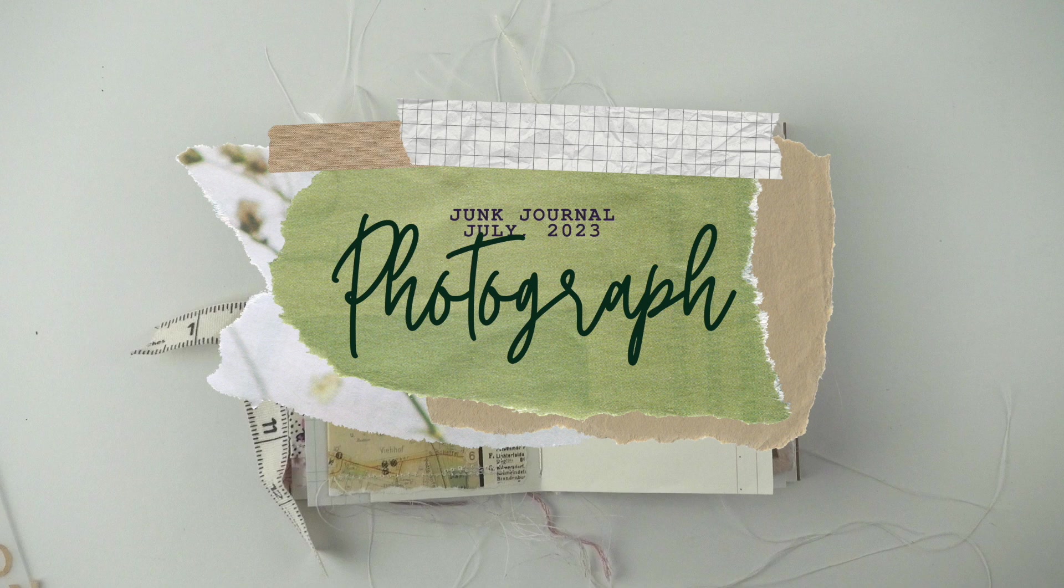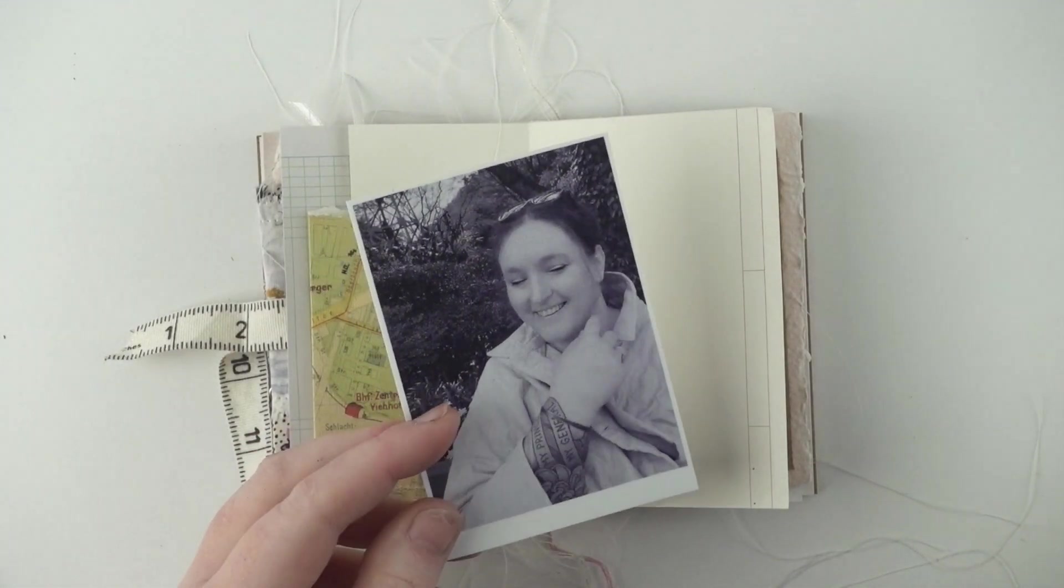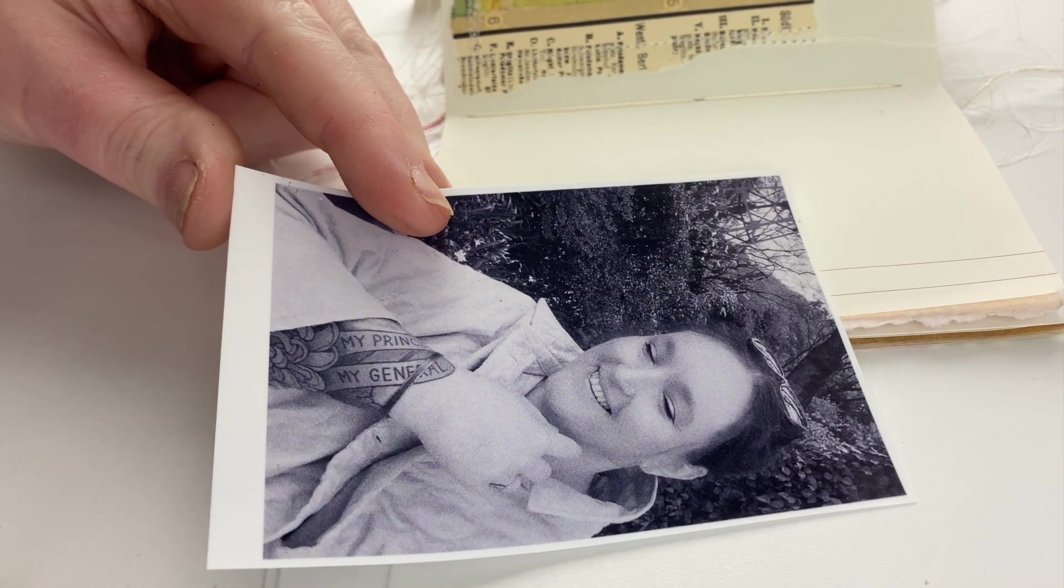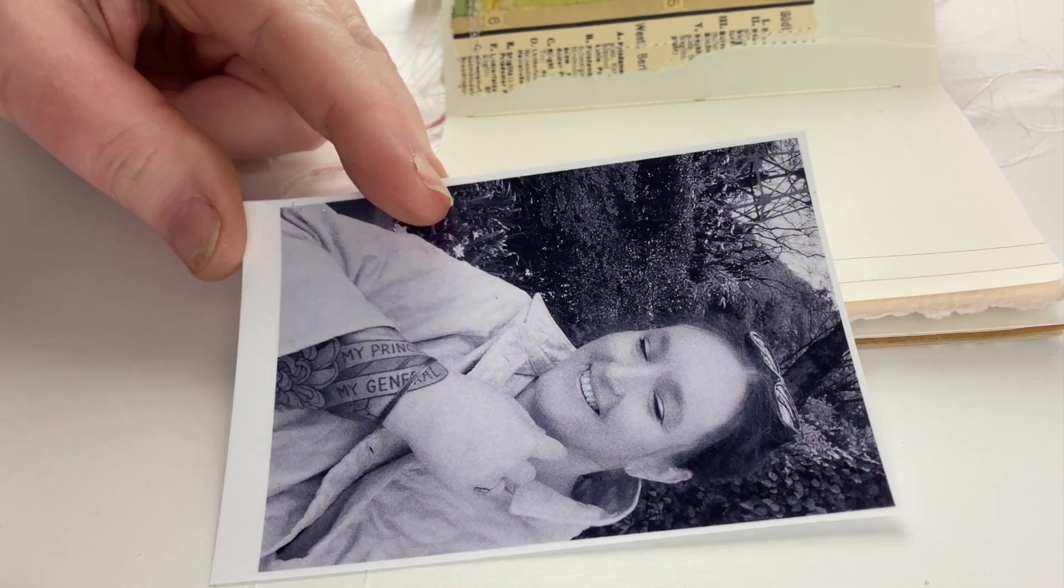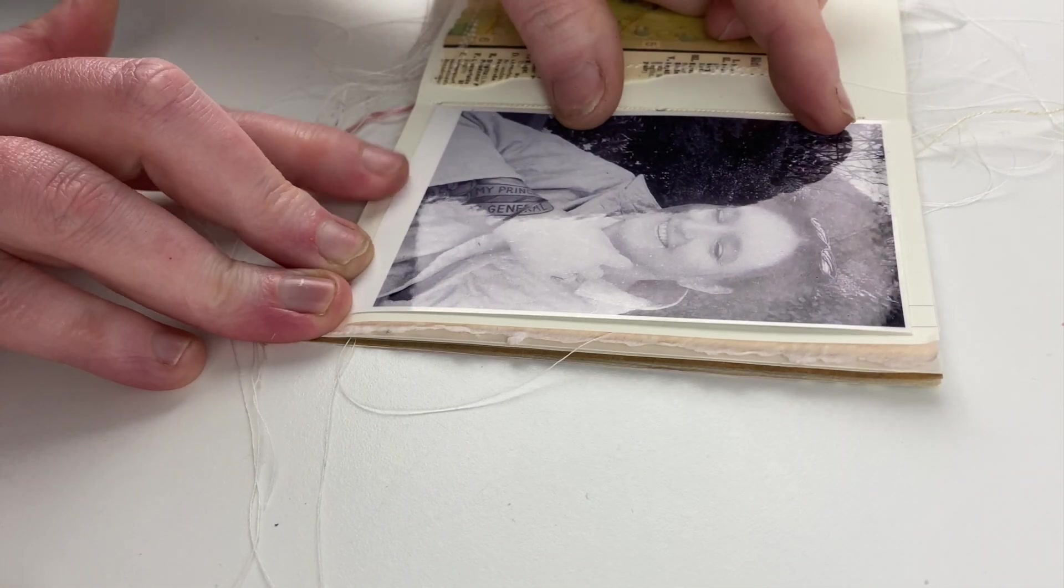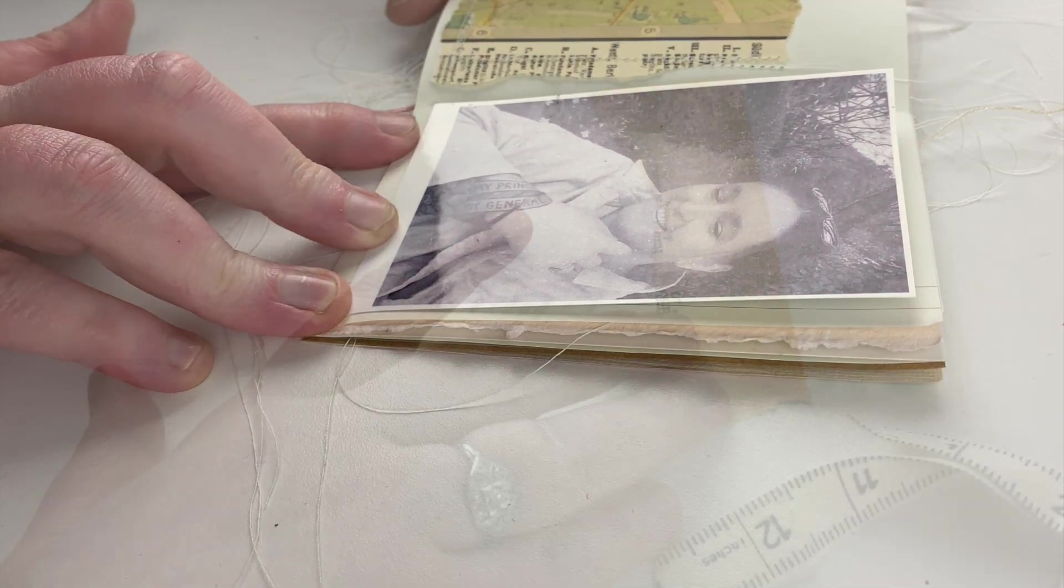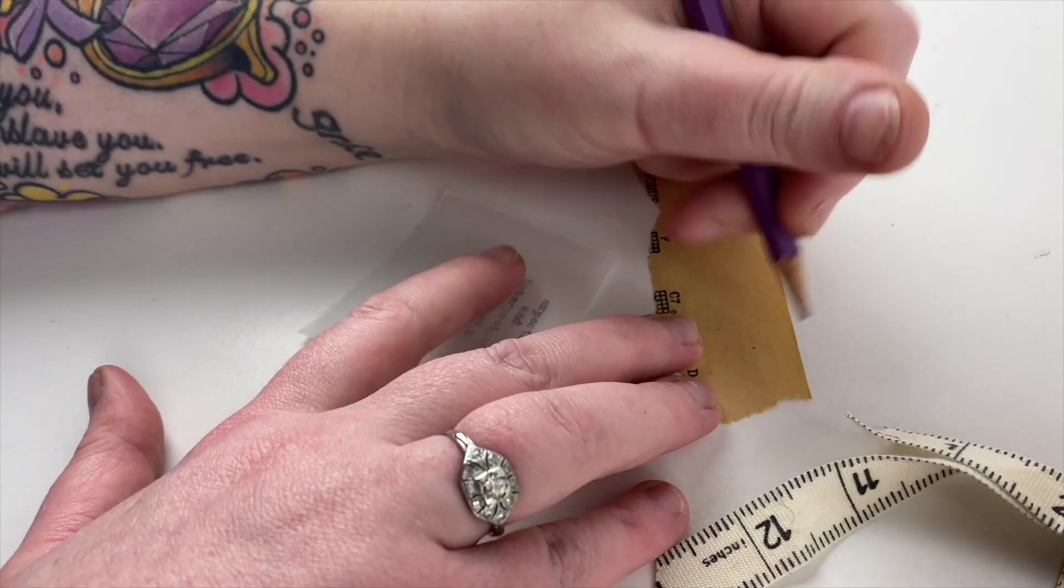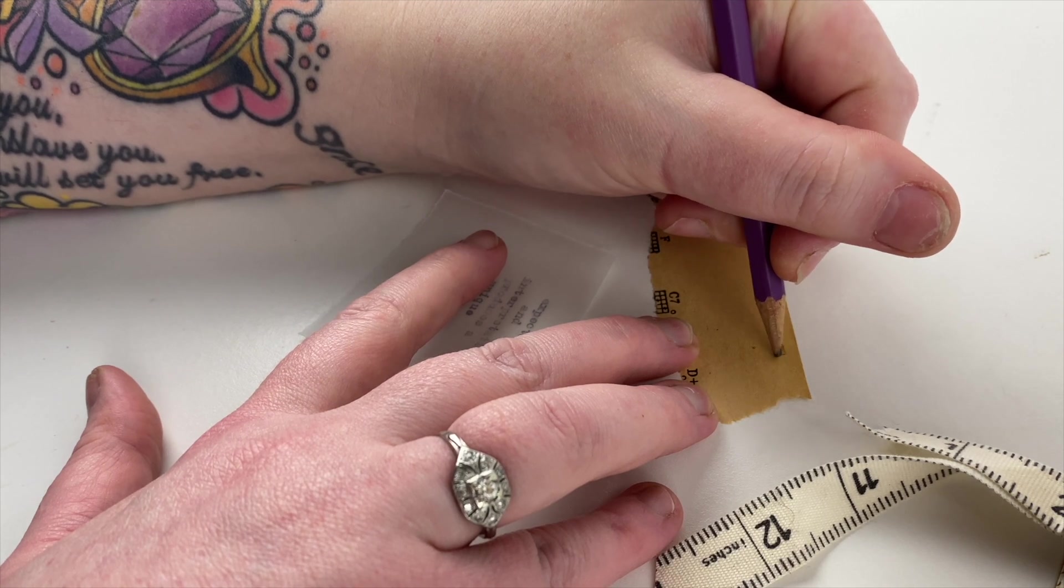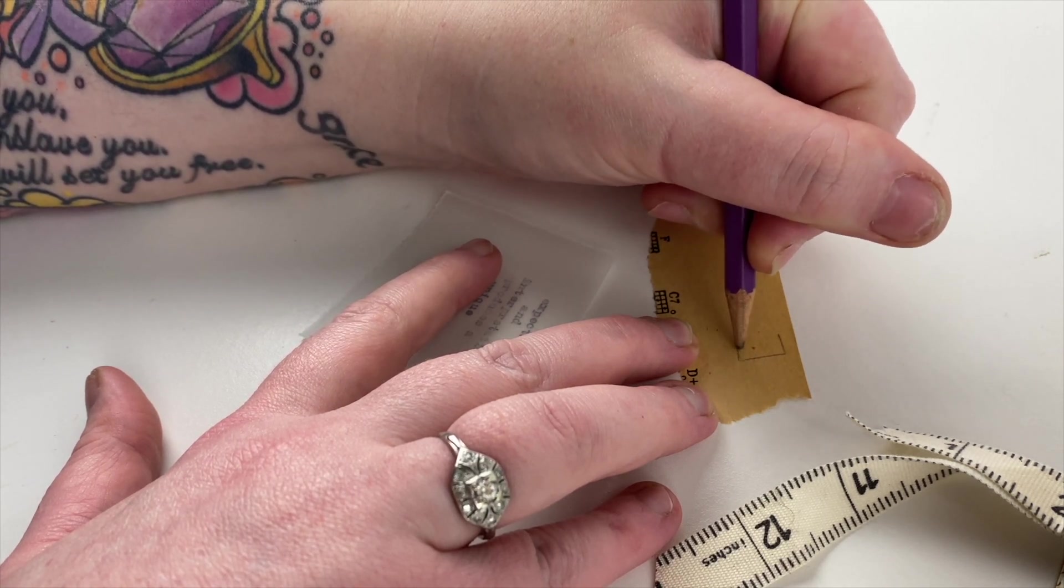The prompt today is 'photograph', so I've taken this photograph of myself - this was a selfie - and I've put it in Photoshop and done a bit of playing with it to make it less clear. I've added some noise, taken out the color. It's obviously very clear what it is, but it looks a little bit more like a photo from a newspaper rather than a crisp digital image. I've printed that out on some glossy photo paper that's actually also a sticker, which you'll see a little bit later.